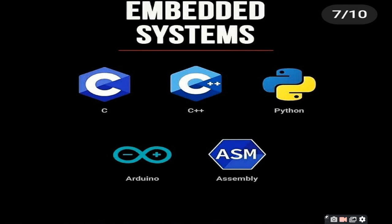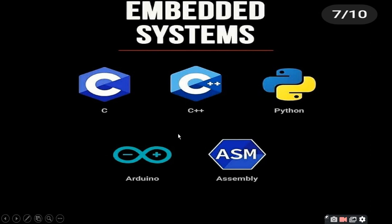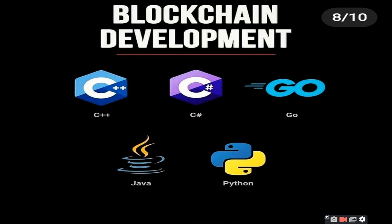Embedded Systems. In embedded systems, one system is used inside another system. The languages used are C, C++, Python, Arduino, and Assembly language. Assembly language uses processor-specific registers — for example processors like 286, 386, and 486 each have their own assembly. C and C++ are widely applicable, and Python has already been covered. These are all embedded programming languages, and we have created a video for you on this.